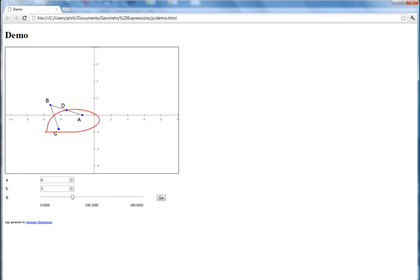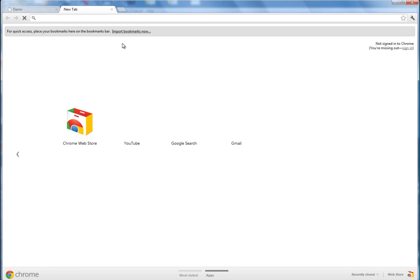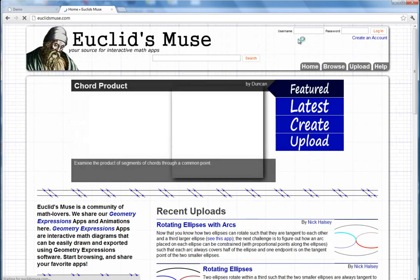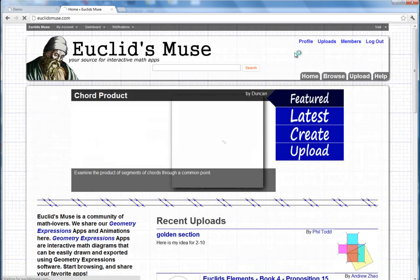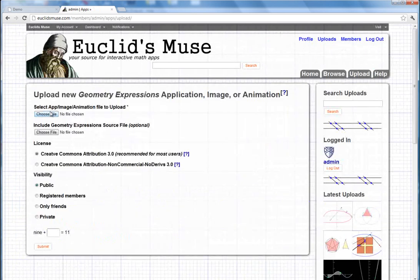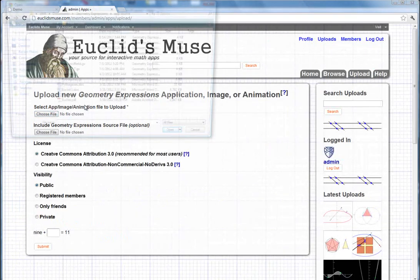So everything's looking just how we want it here. So let's go to euclidsmuse.com, and we will go ahead and log in. And then from here, we're just going to click on upload. And then we'll select that file that we just created.